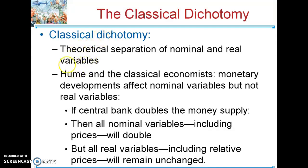One specific point of the classical dichotomy is that when you change the money supply, none of the real variables are affected — real GDP, unemployment rate, or relative prices like the fact that a subway sub is six McChickens. You print money, it should still be six McChickens. None of the real variables in your economy are affected.